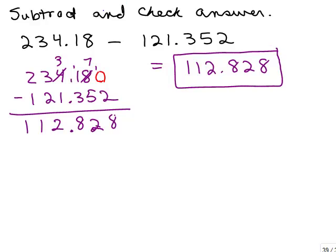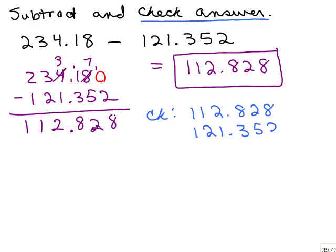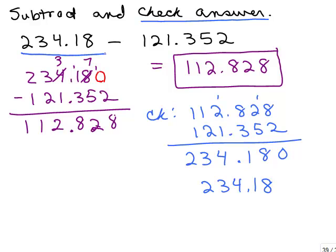Let's check it. Because I said check your answer. And how do you check it? You take your answer plus the number you were subtracting, and you want to get back to this. So we're going to take the 112.828, add it to the 121.352, and see what we get. So now this gets you practiced with adding with decimals. So you have 10, 8, 11, 4, 3, 2, which is 234.18, and that was the original number up here. So it checks.